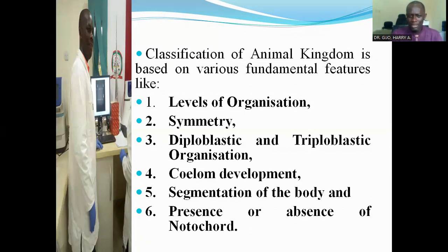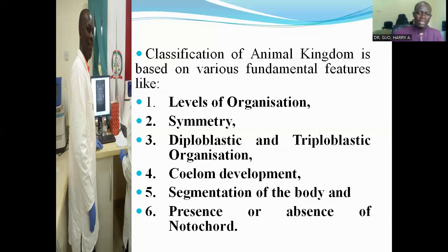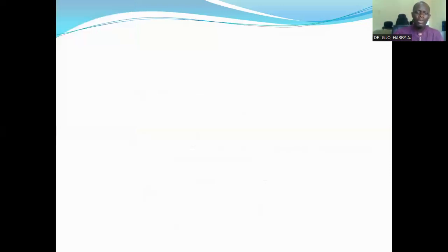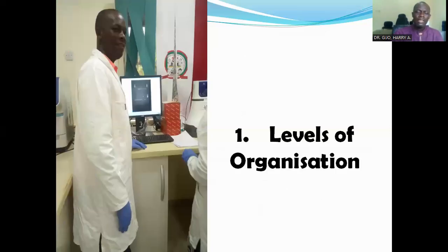Their level of organization; the symmetry; whether they are diploblastic or triploblastic; then whether they have a coelom or not; then segmentation of the body, if they're segmented or not; then the presence or absence of notochord. Now I want to look at the first distinctive feature used for classification of animals — that's level of organization.